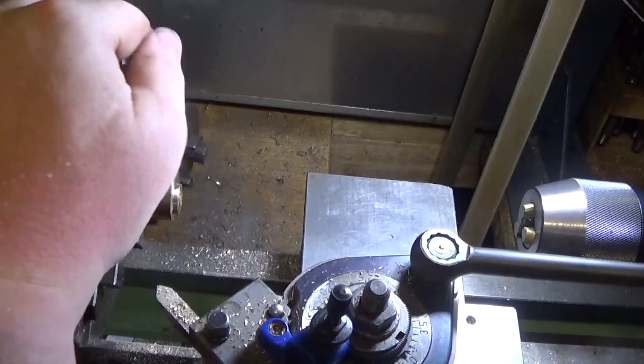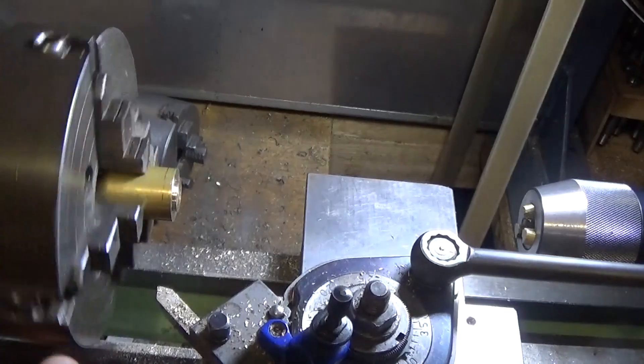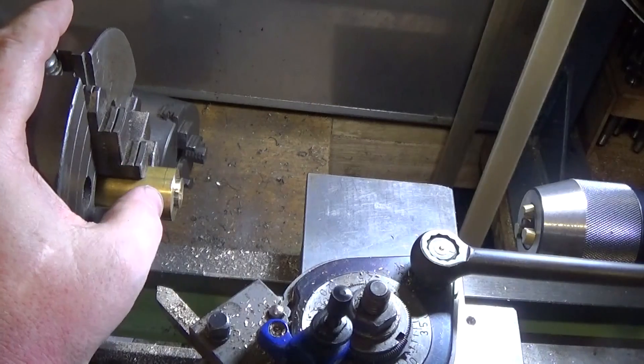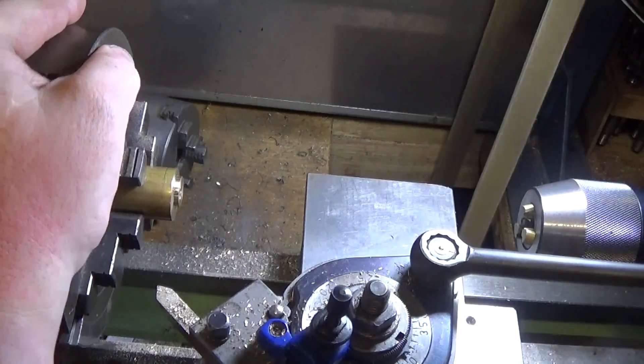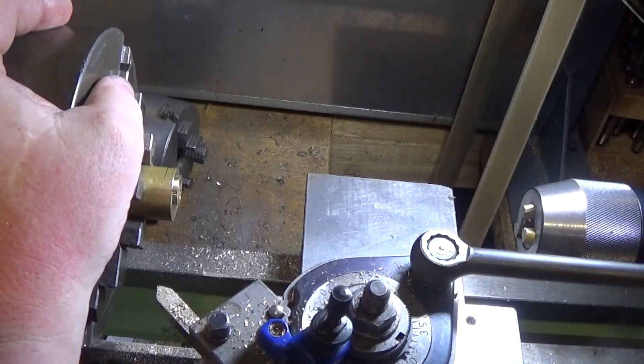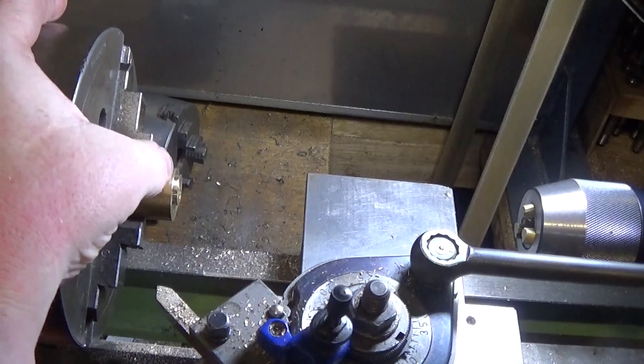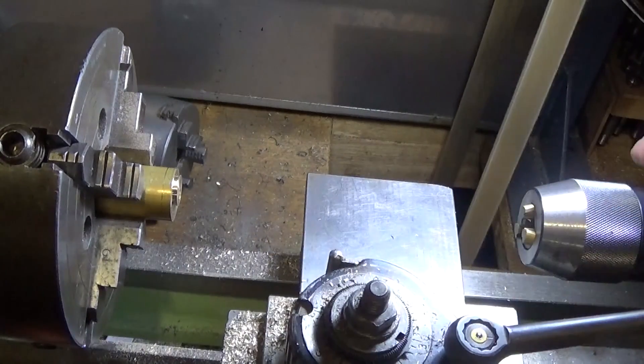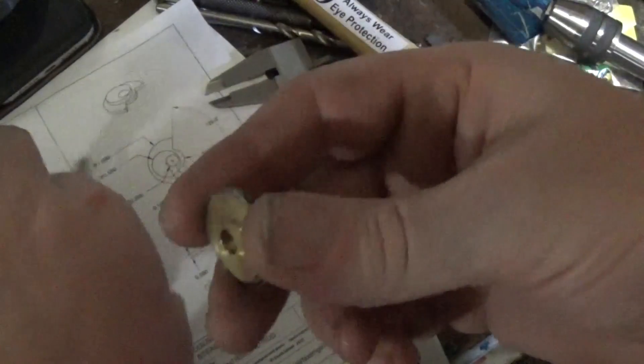That should only need a fraction out of it to be a running fit on that eccentric, and I'm going to do that later, rather than drill right through this piece of brass and make it no good for anything else. So next job is to set this up and to part it off.